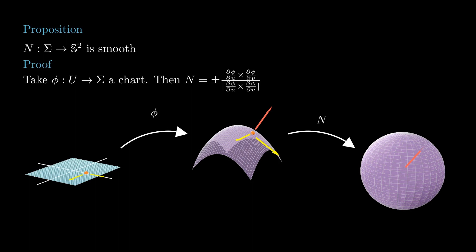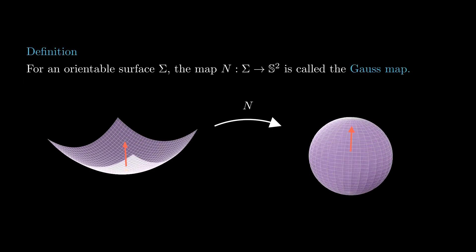Then n is either given by this formula or minus this formula. In either case, it depends smoothly on u and v, which is exactly what we wanted to show. When we have a surface with an orientation, we call it an oriented surface, and very often we will call the orientation the Gauss map.